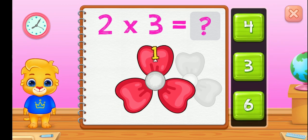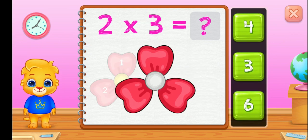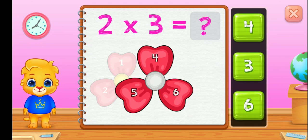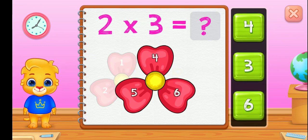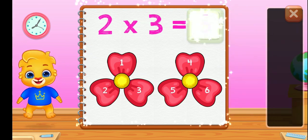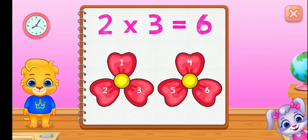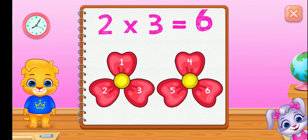One, two, three, four, five, six, seven, eight. Two, three, four, five, six. Two groups of three equals six.